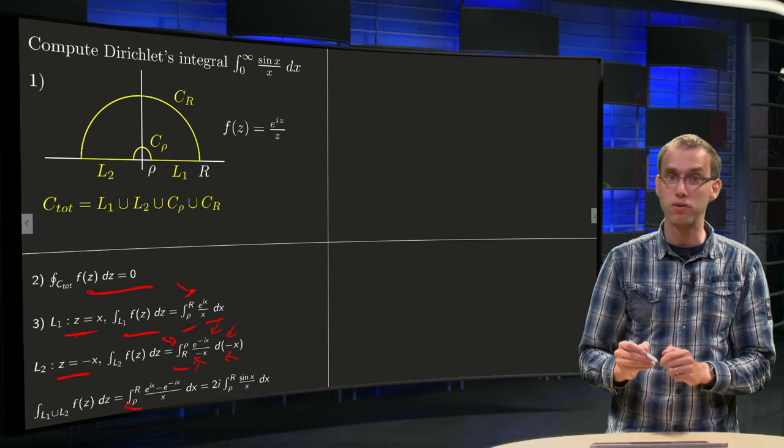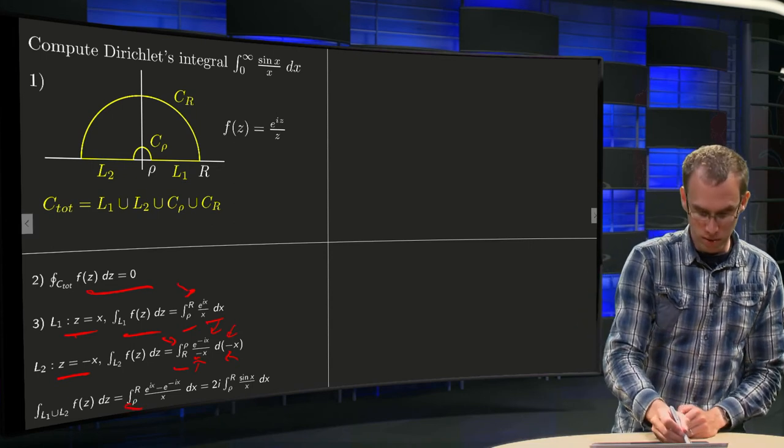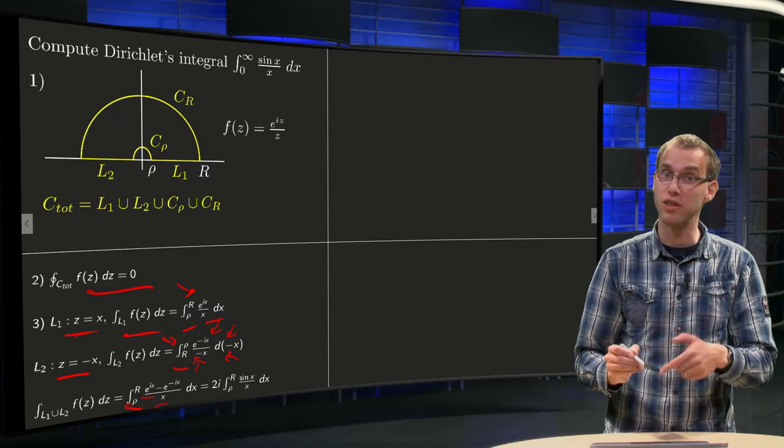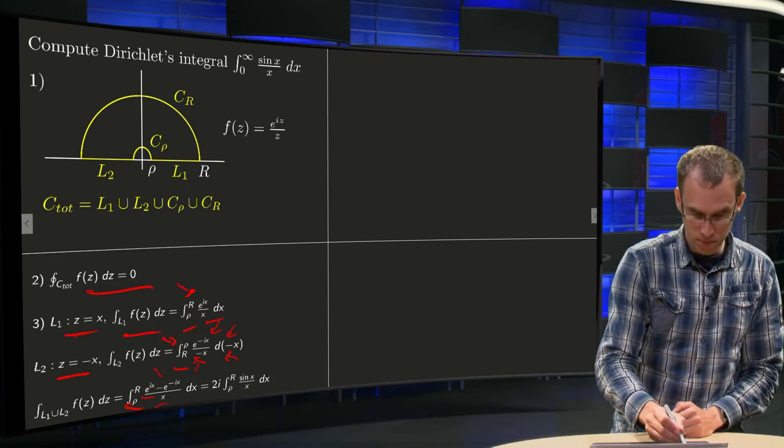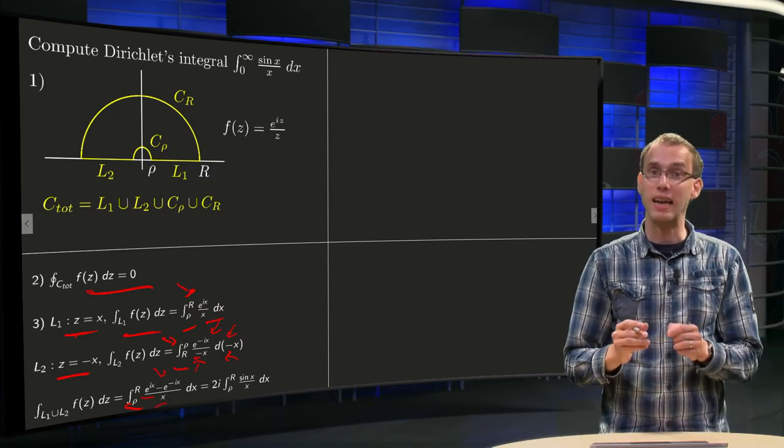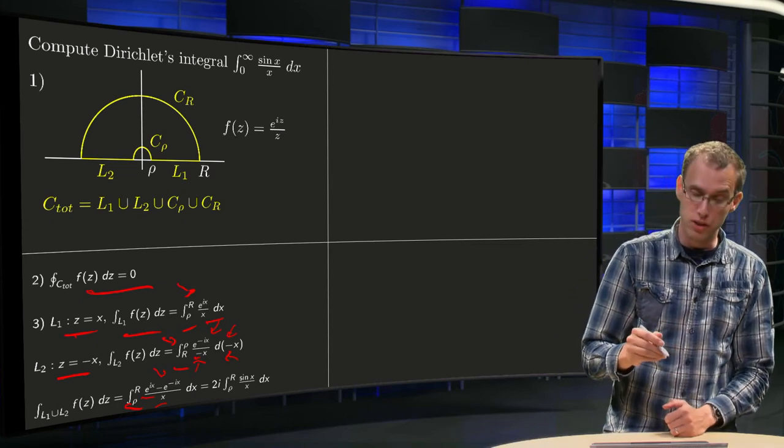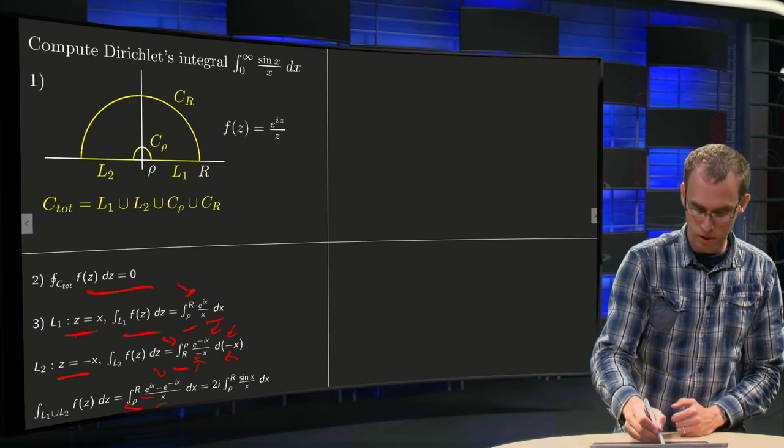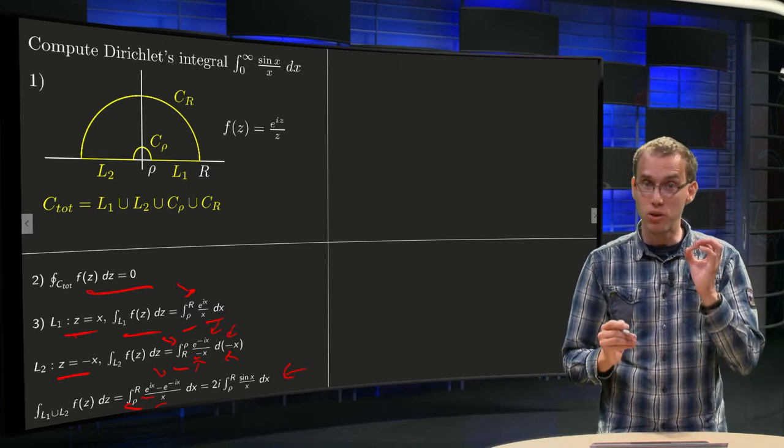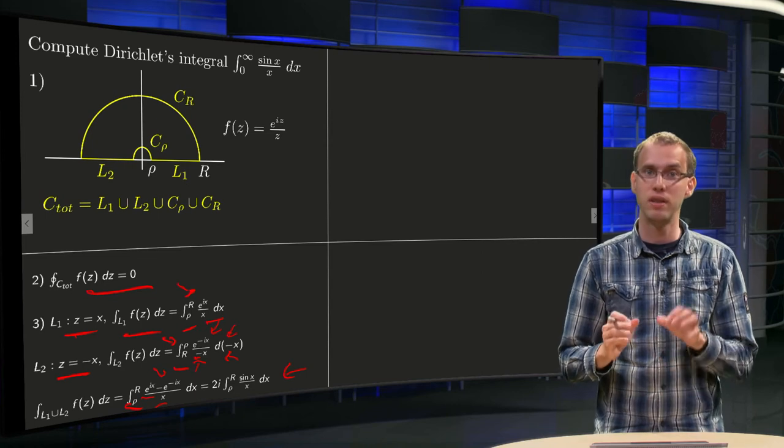So if you take the two together, you go from rho to R, both of them. The first one gives you e to the power ix over x dx, and the second one gives you a minus e to the power minus ix over x. And e to the power ix minus e to the power minus ix is exactly sin x times 2i. So there we are, that's the integral we want to have.